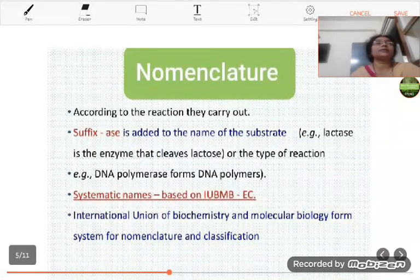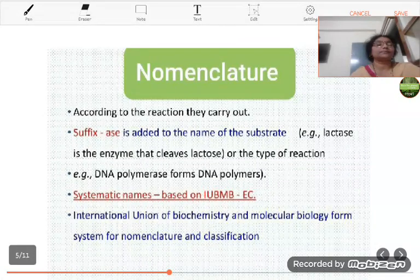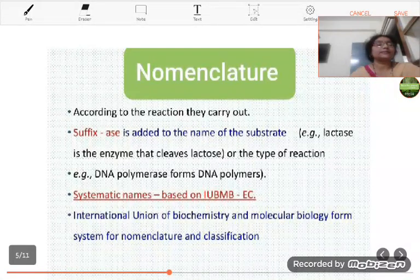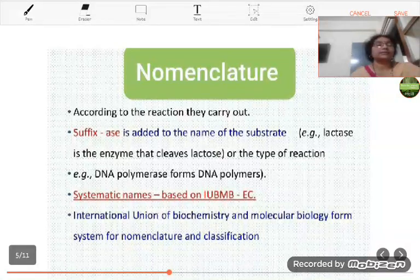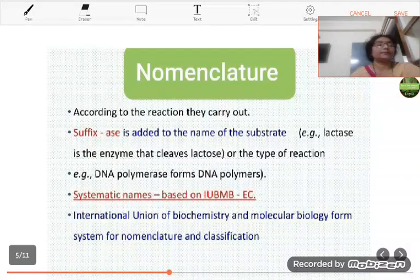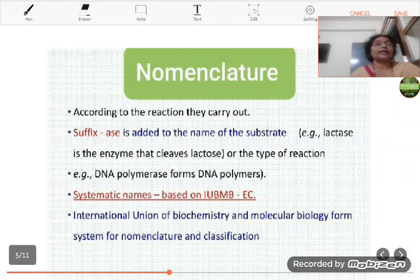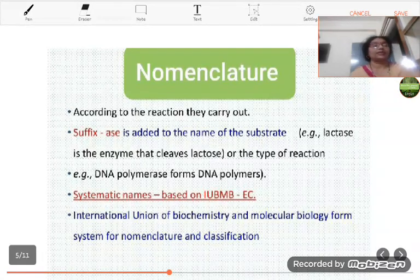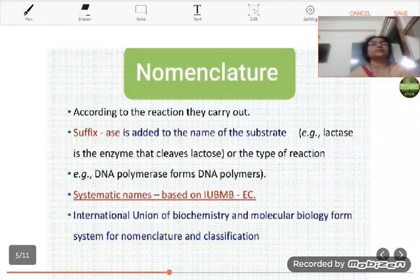And it was recommended that there should be two nomenclature for enzymes, one systematic and other trivial. The systematic name was given in accordance with definite rules and trivial name was short but not very systematic.